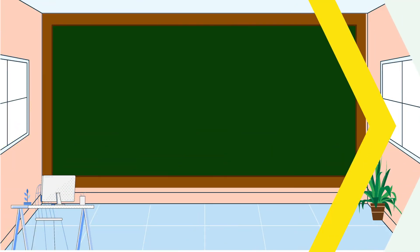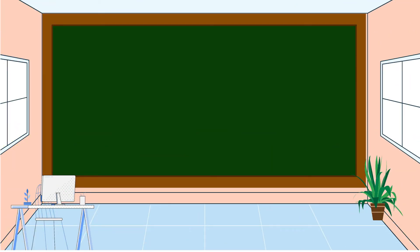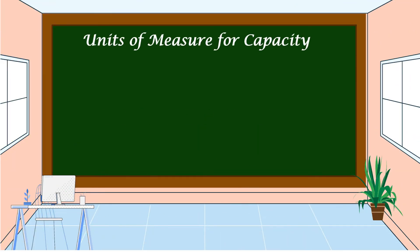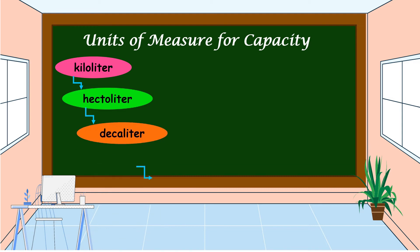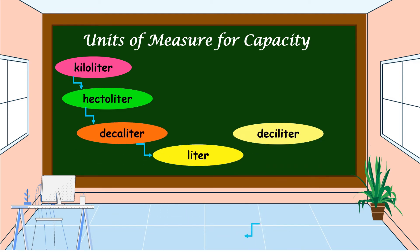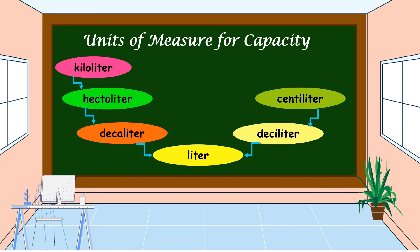The last but not the least are the units of measure for capacity: kiloliter, hectoliter, decaliter, liter, deciliter, centiliter, and milliliter.